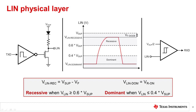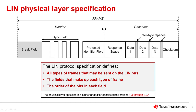The LIN physical layer signals either recessive or dominant. To indicate dominant, the LIN pin voltage must be less than or equal to 0.4 times the system's supply voltage. It is recessive when the LIN pin voltage is greater than or equal to 0.6 times the system's supply voltage. The LIN protocol specification defines all types of frames that may be sent on the LIN bus, the fields that make up each frame type, and the order of bits in each field. The physical layer is unchanged for LIN specification versions 1.3 through 2.2a.